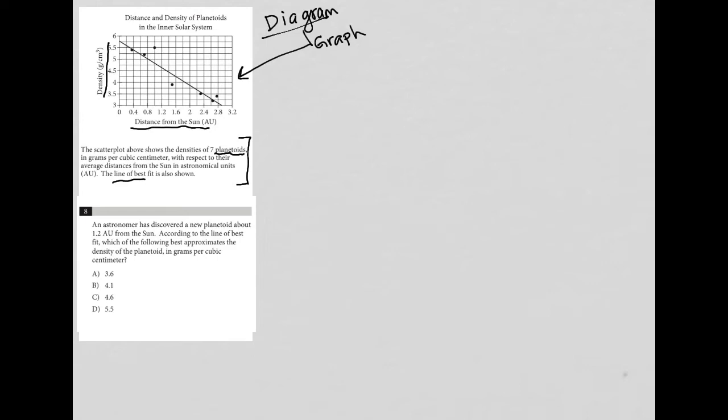We have a line of best fit to show how density relates to the distance from the sun. Question eight says, an astronomer has discovered a new planetoid about 1.2 AU from the sun.